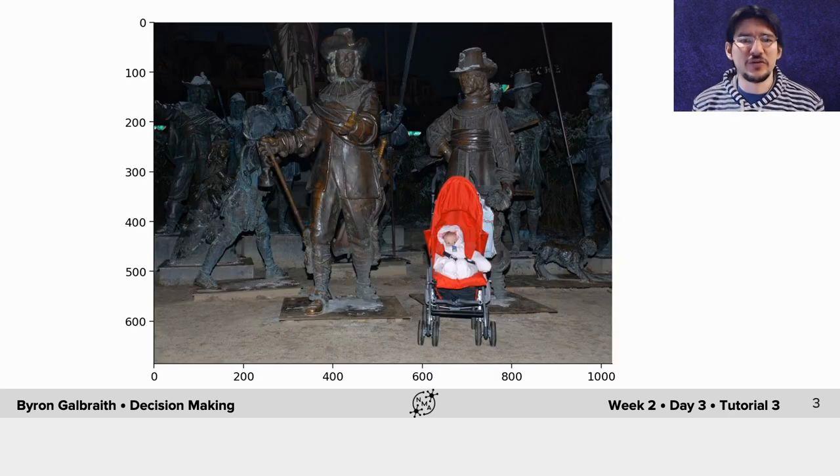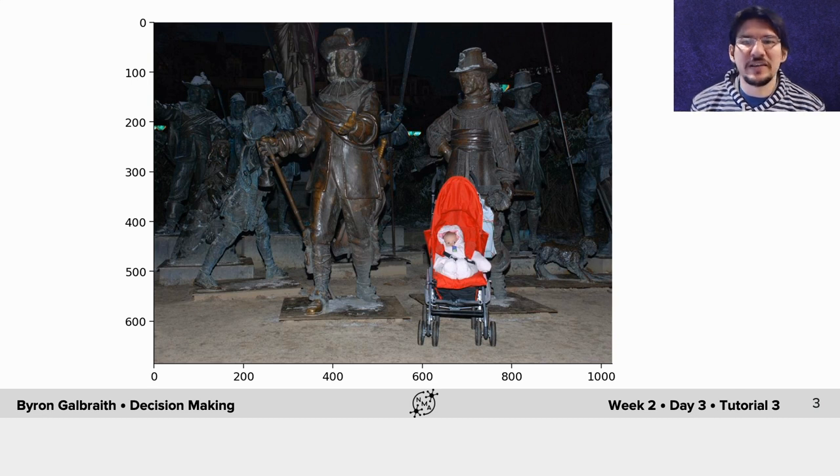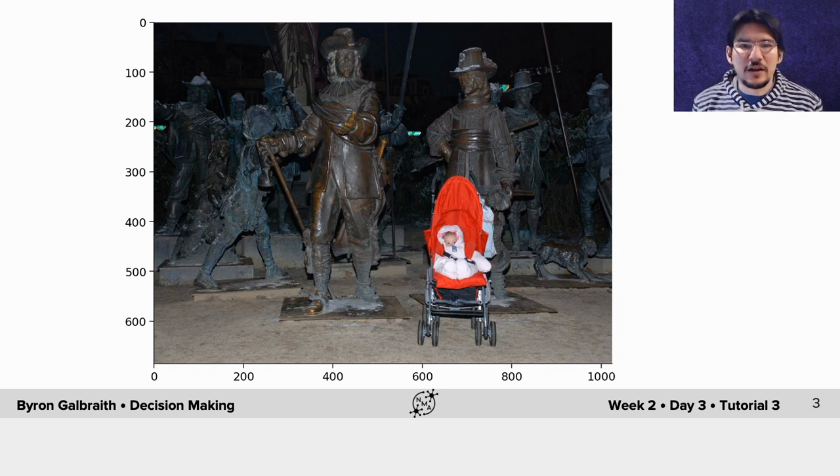So here's an image taken from this visual saliency task that we're going to be exploring. Very briefly, visual saliency is the idea of what in an image draws our attention, what draws our gaze. Subjects were asked to stare at a screen, fixate at the center, and an image like this appeared. They were given a few seconds to just freely gaze around the image as whatever drew their attention.